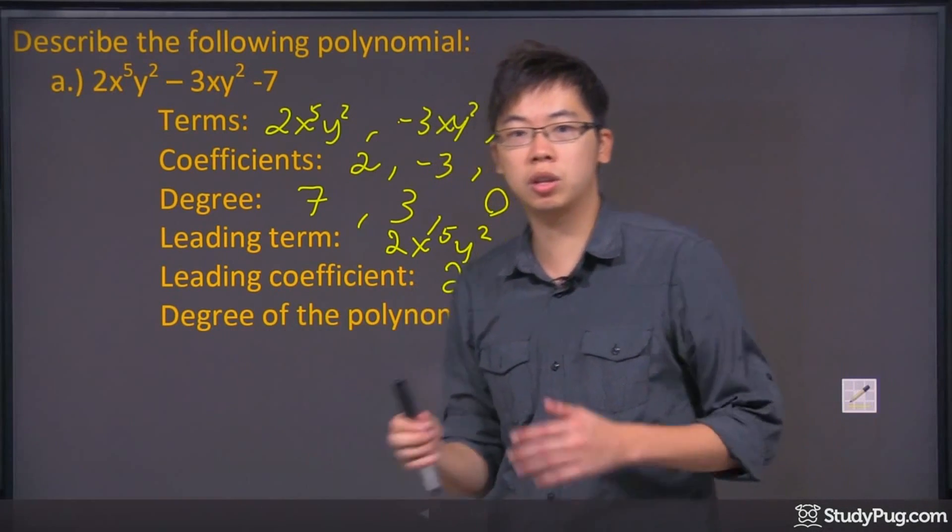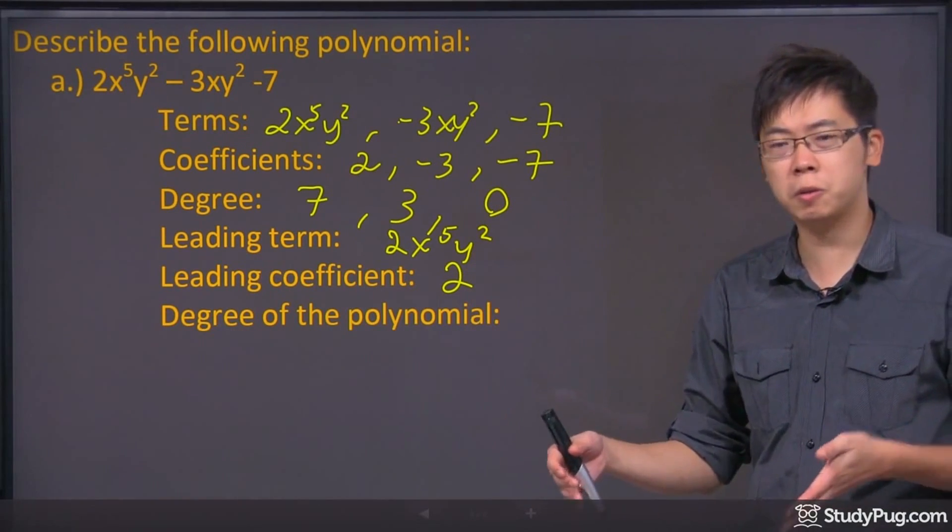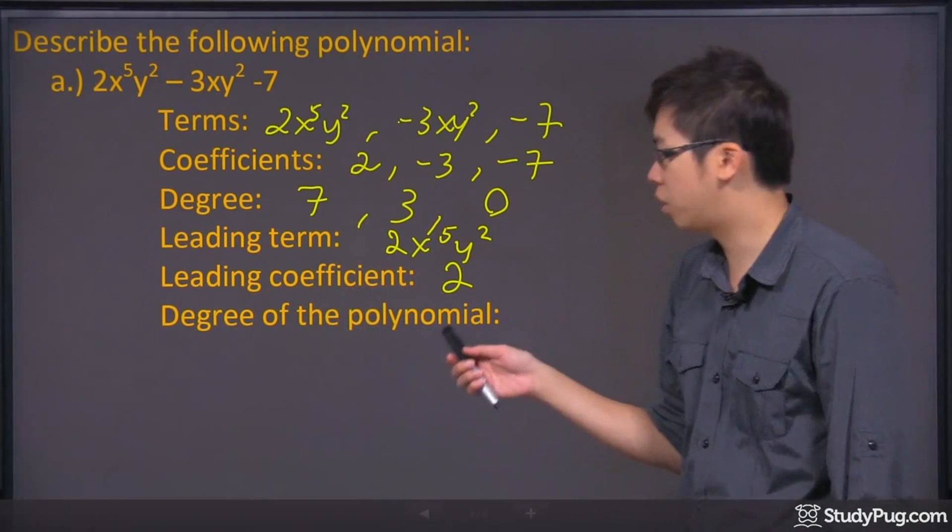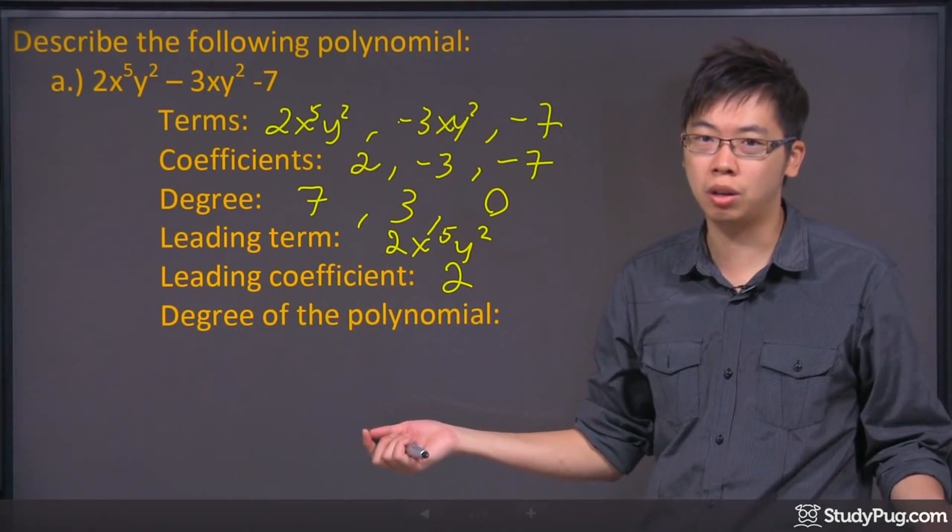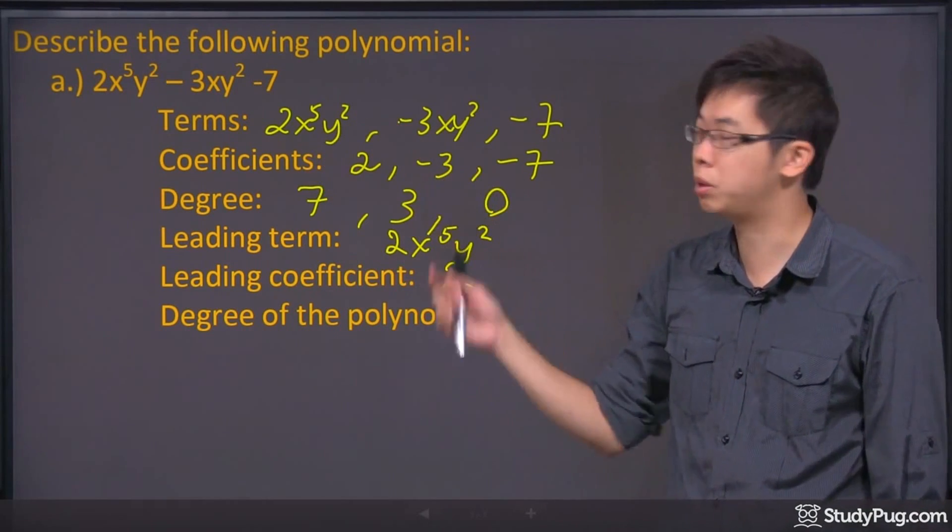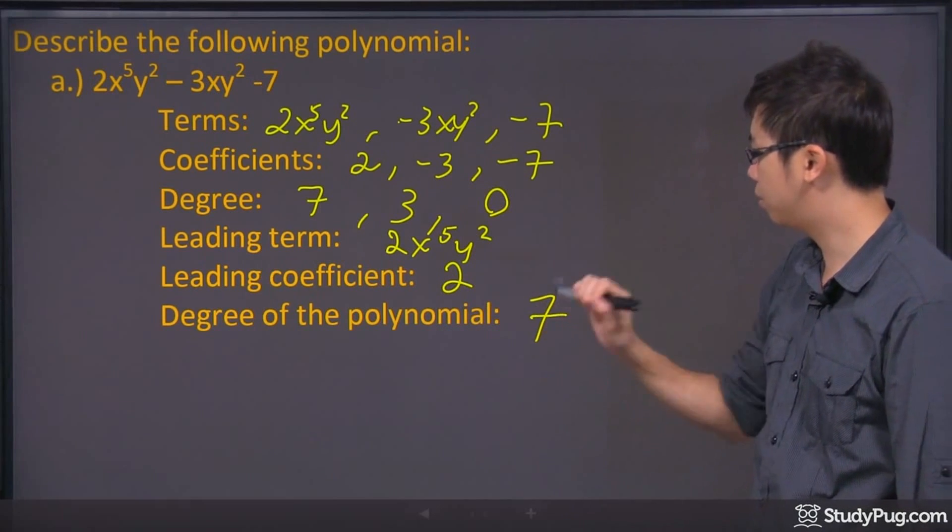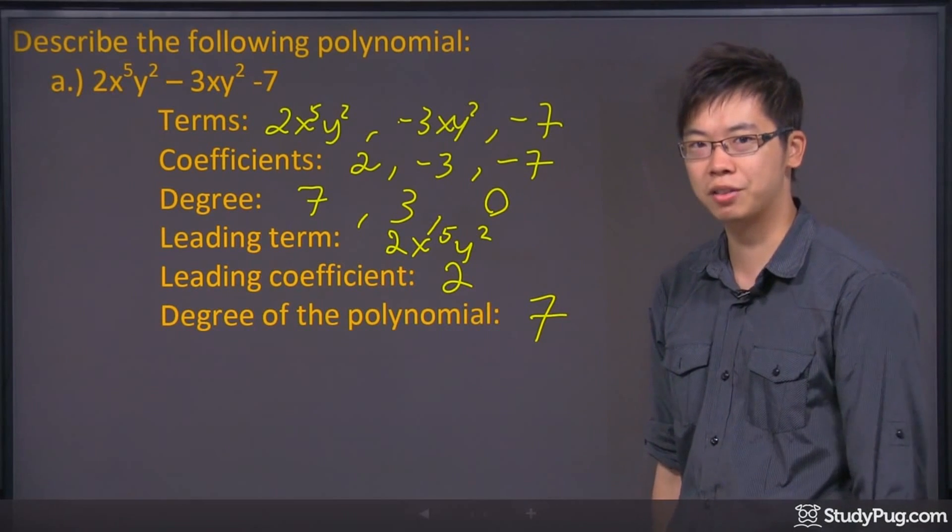And sometimes they will ask you for the degree of the entire polynomial. You have to pick the leading term, or simply pick the highest degree in this polynomial. So the degree that we have is 7, 3, and 0. So the greatest one would be 7. And that's it. Thanks for watching.